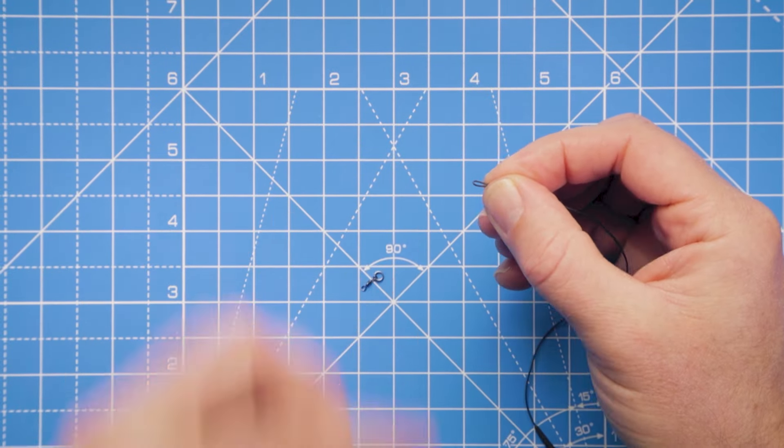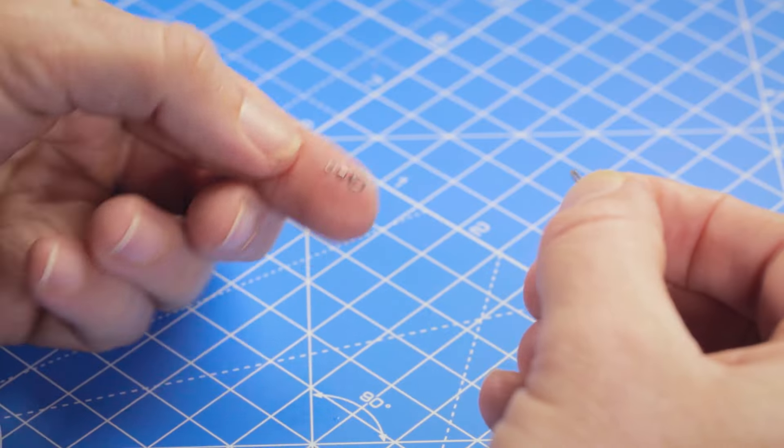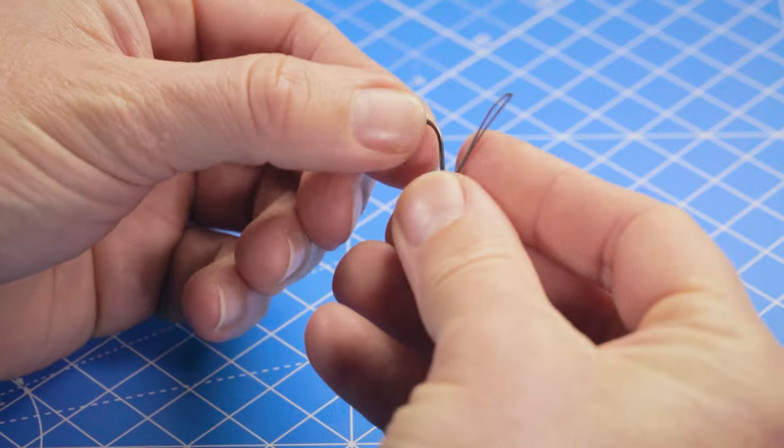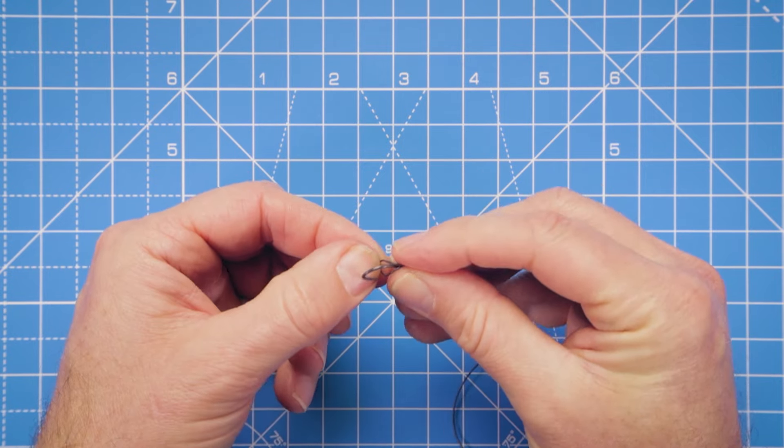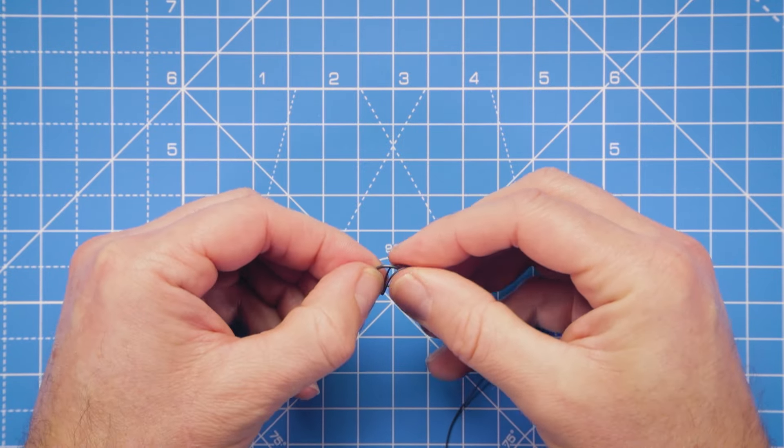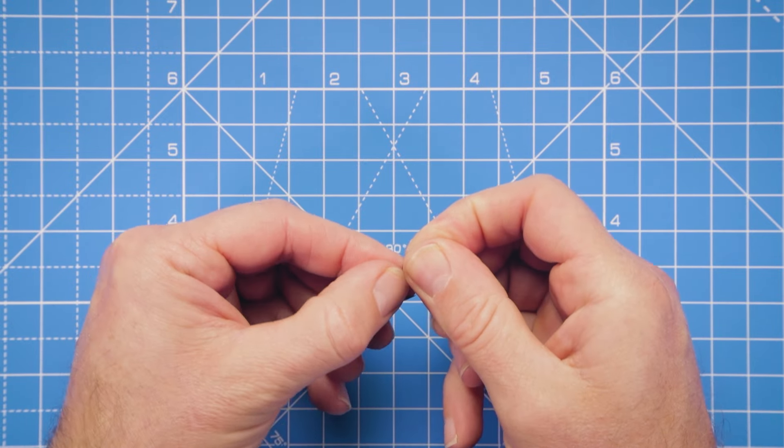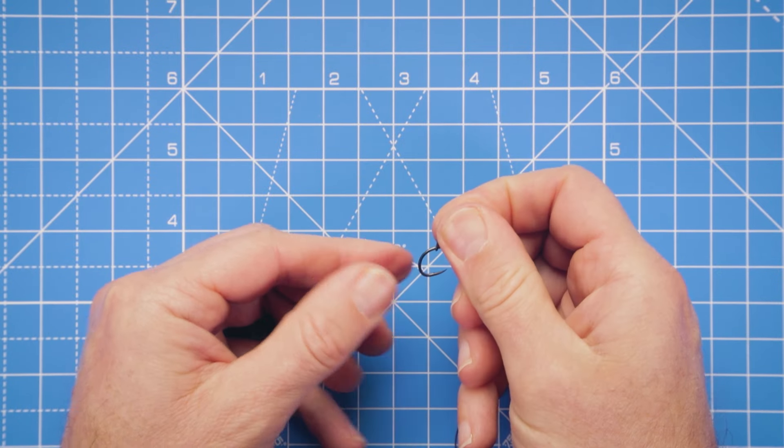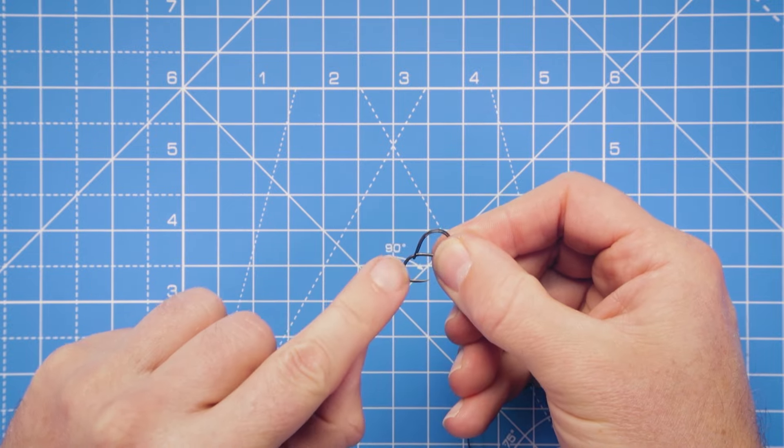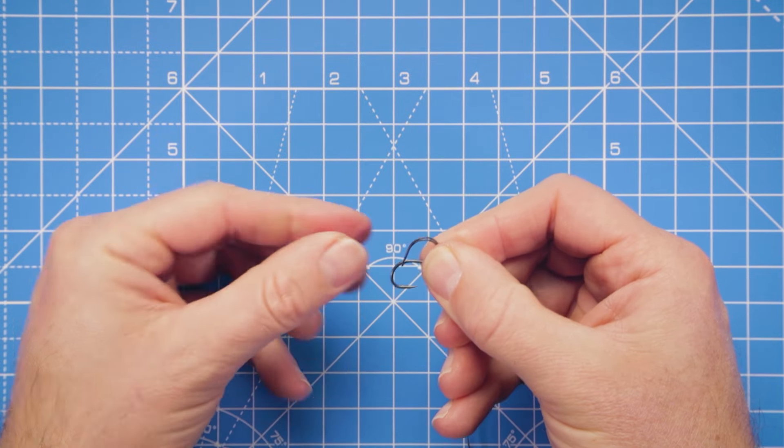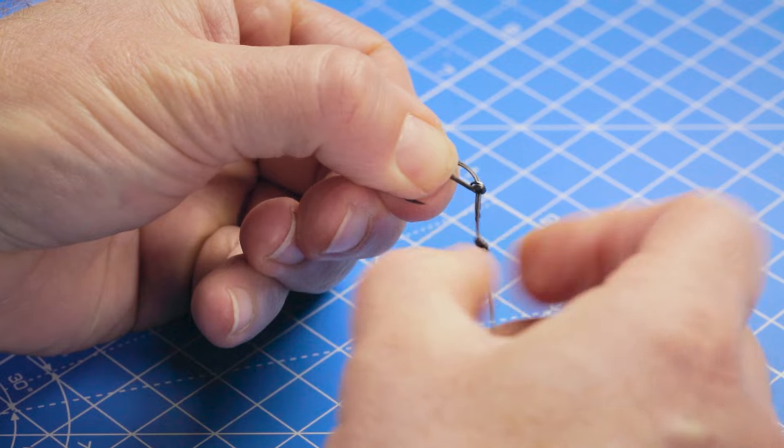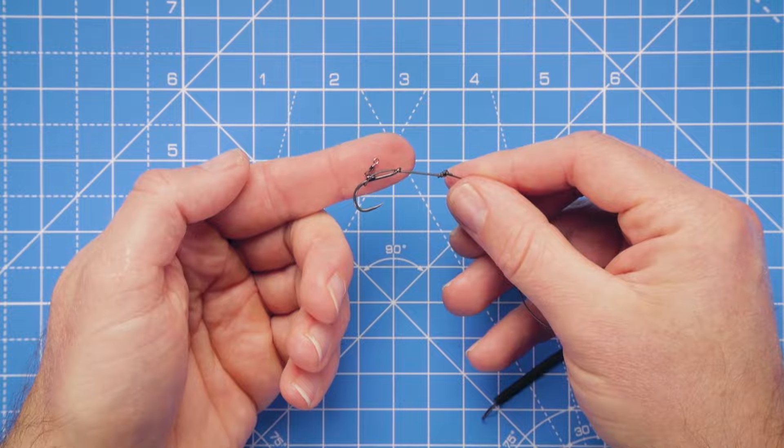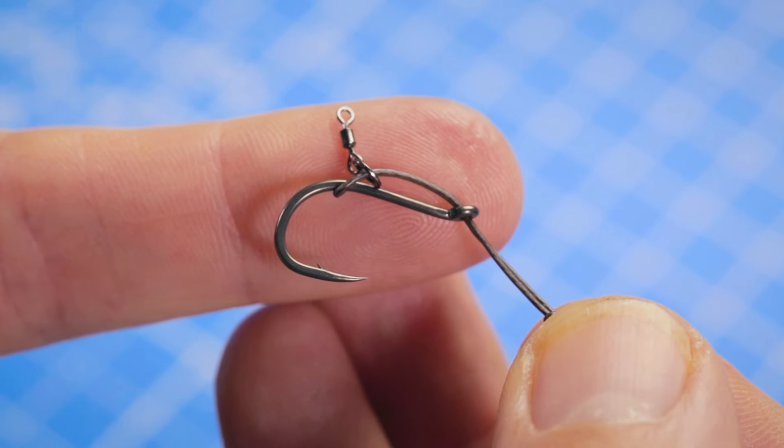And now we just take our micro ring swivel—just going to lick my finger so it sticks to it, makes it easy to hold—thread that onto the loop. And now we can pass the hook up through that loop. And now we just want to set the size and shape of the D section. So I want it beginning roughly there, opposite the bar above the hook. Just pull that loop down a little bit. And there we go, that's that section of the rig complete.